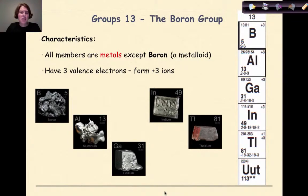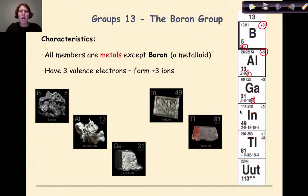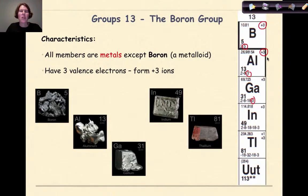Group 13 is known as the boron group. These are all metals with the exception of boron, which is a metalloid. They have three valence electrons and will form plus three ions. Boron can be identified as a metalloid — it's shiny but looks brittle — whereas aluminum, gallium, indium, and thallium are characteristic metals: malleable, ductile, and able to conduct electricity. As we get into metalloids and non-metals, we notice an increase in metallic character as you go down the group.